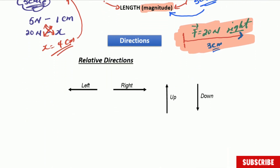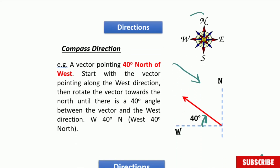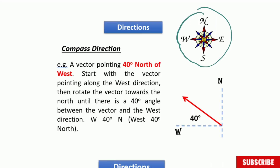Now let's speak about direction. There are different ways of giving direction for vectors. The first is relative direction: left, right, up, or down. Do not confuse relative direction with compass direction. For example, north and up are not the same thing. When you use north, you are using the compass direction — the cardinal points of the Earth. Do not confuse up with north, because they are not exactly the same thing.